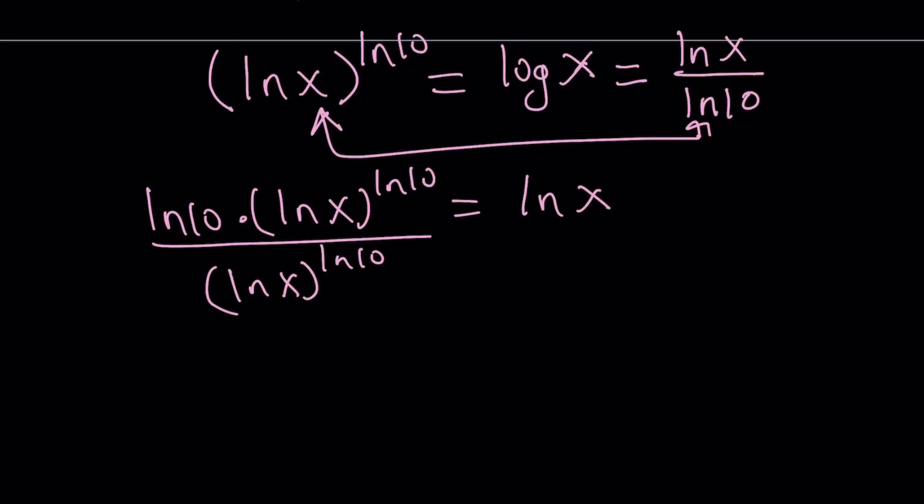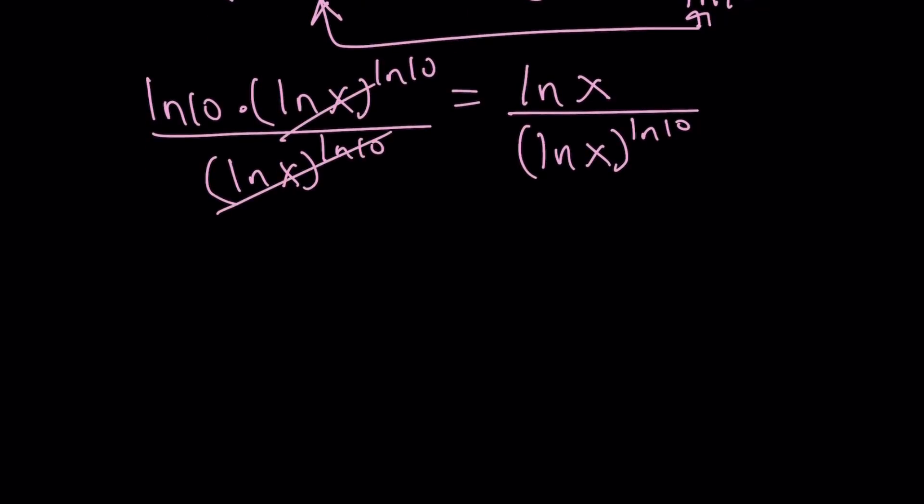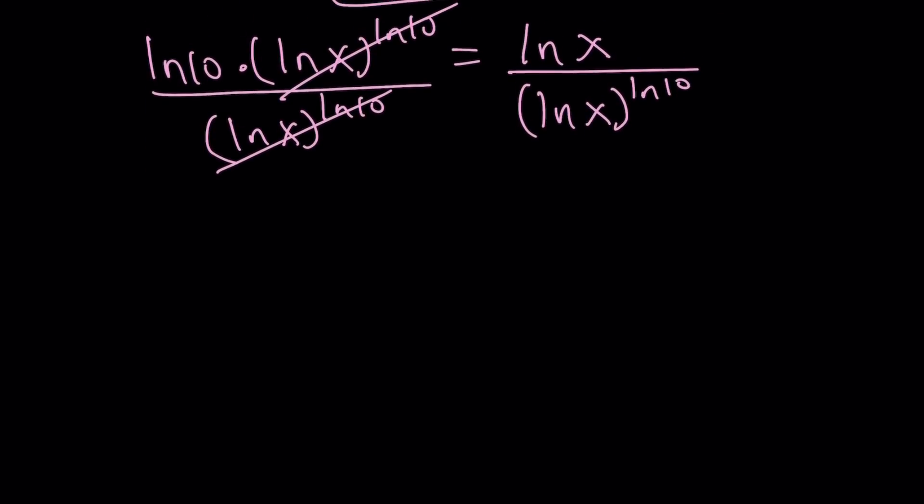Because we have two expressions with the same base. So we can go ahead and divide them. This becomes one. Obviously, that's not zero, right? As long as x does not equal one, of course. And you probably know that x equals one is not going to work. Or is that? Well, it's not in the domain because ln 1 is zero. Log zero is ln zero is undefined. Great. So one is not going to work anyways.